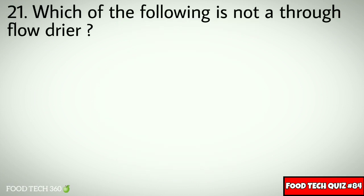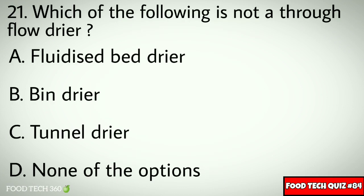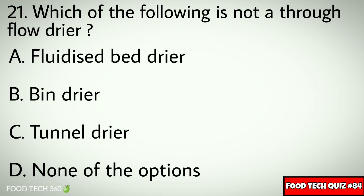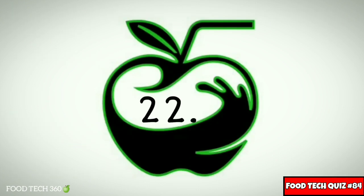Question number 21: Which of the following is not a through-floor dryer? Options: A. Fluidized bed dryer, B. Bin dryer, C. Tunnel dryer, D. None of the options. Correct answer: C. Tunnel dryer.